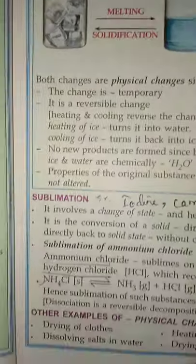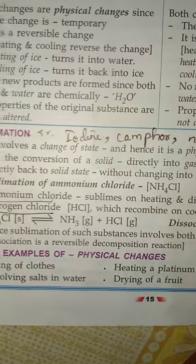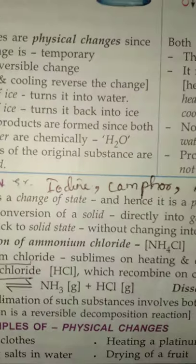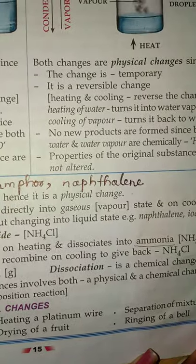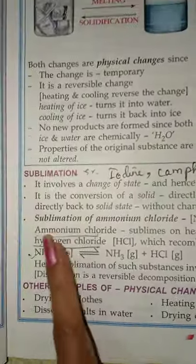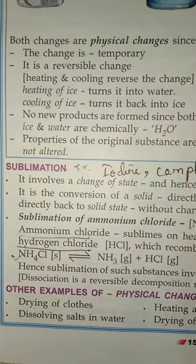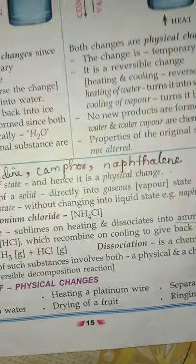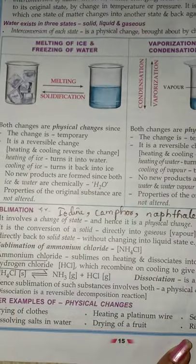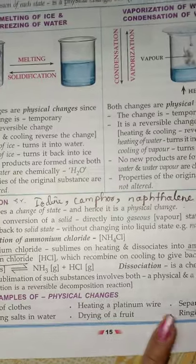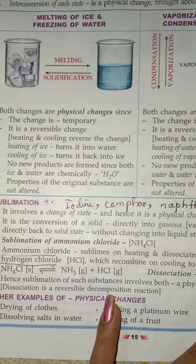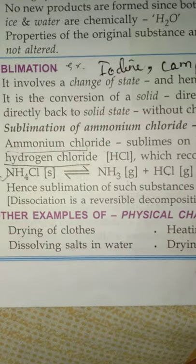Moving to sublimation — we know it is a process that involves change of state from solid directly to gaseous. Here we have ammonium chloride as an example. When ammonium chloride is subjected to sublimation, it gives two gases: hydrogen chloride gas and ammonia gas. Coming to dissociation, it is a chemical change. Sublimation involves both physical and chemical change. Dissociation is a reversible decomposition reaction. Other examples of physical change are drying of clothes, dissolving salts in water, heating of platinum wire, drying of a fruit, separating mixtures, and ringing of a bell.